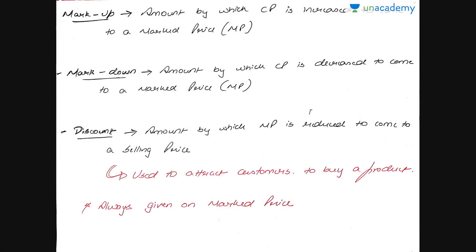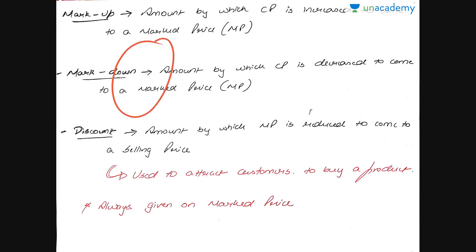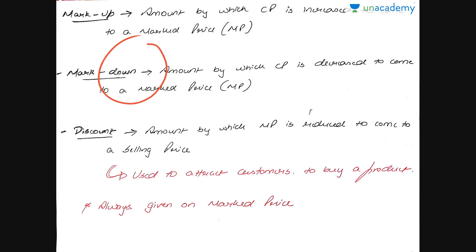Markup is the amount by which the cost price is increased to arrive at the mark price. For example, 50 rupees is the cost price and I mark it up by 50 rupees, so the marked price is 100 rupees — that's a markup of 50 rupees. Markdown is the amount by which the cost price is decreased to arrive at a mark price. If I bought the product at 50 rupees but realize it won't sell well, I mark it down to 40 rupees, which becomes my mark price.